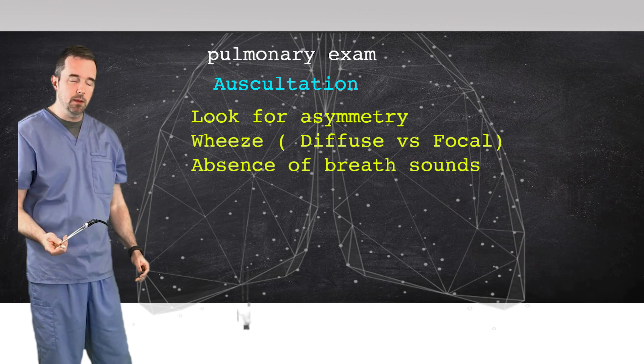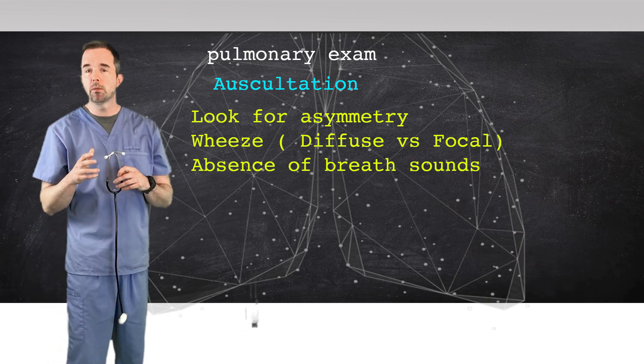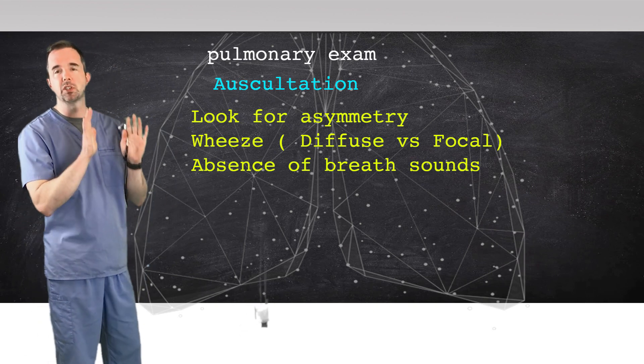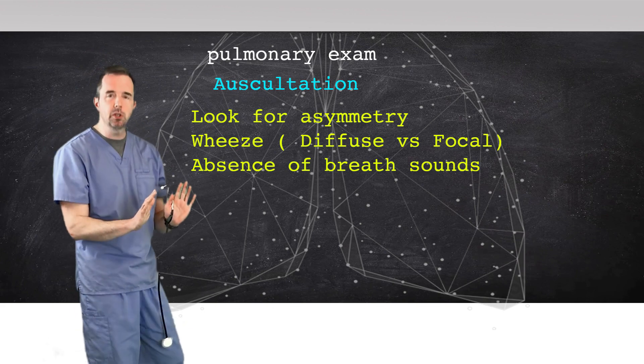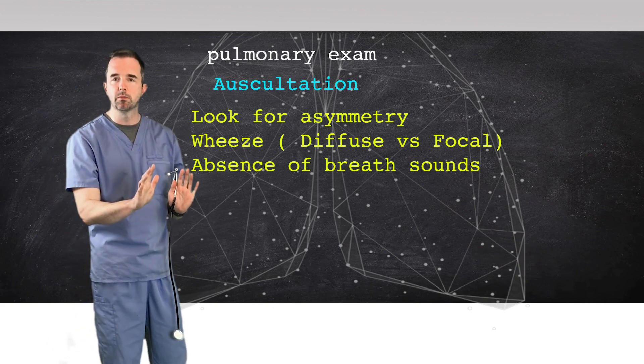As I examine the patient with my stethoscope, I start by looking for symmetry. Everything I'm going to do, I'm comparing the left to the right. So as I start with auscultation, I ask the patient to take deep breaths in through their mouth and out their nose, and I'll listen to the left upper, right upper, right middle, left lower, right lower.